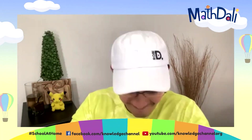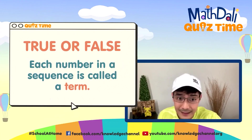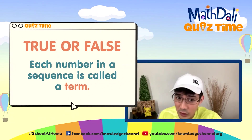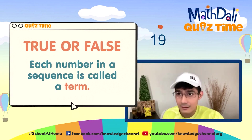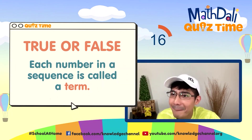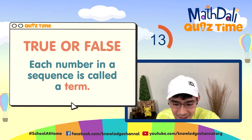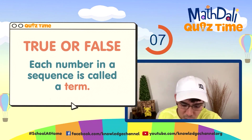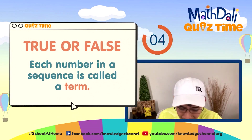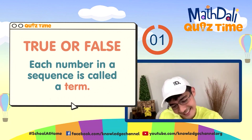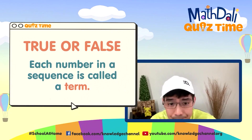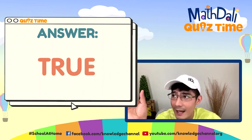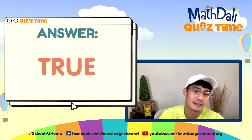Math the League Quiz Time! First question natin: Each number in a sequence is called a term — true or false? 20 seconds on the clock. Ang tamang sagot ay true — very true. Terms ang tawag dun sa each number or figure sa sequence.